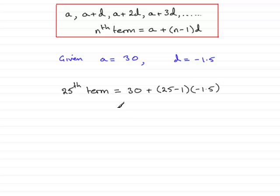And if you work that out, 25 take away 1 is 24, 24 times minus 1.5 is minus 36, so you've got 30 minus 36 and that comes to minus 6. So there you have the 25th term.